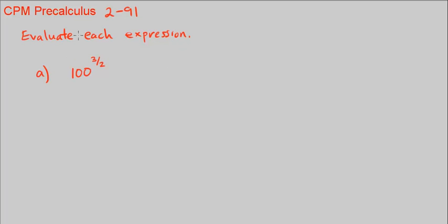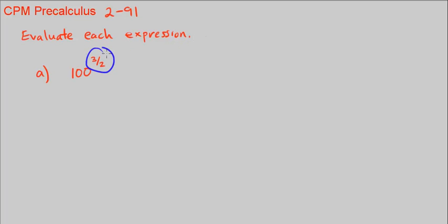This is CPM Pre-Calculus Chapter 2, Number 91. Evaluate each expression. We're given fractional exponents for parts A through D, and we want to go ahead and simplify.